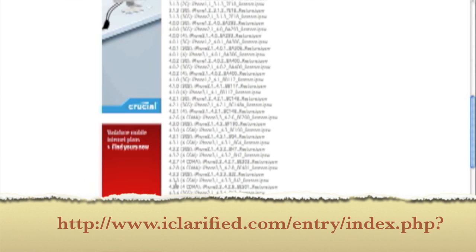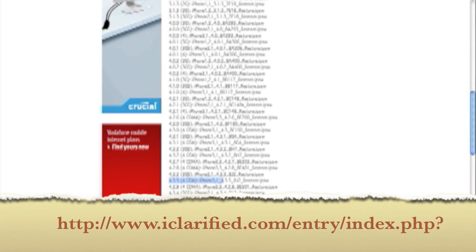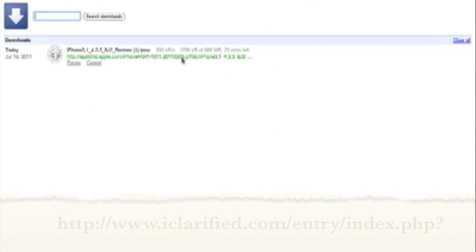I can see here 4.3.3 for iPhone 4 GSM. So if you're using a 3GS, go ahead and click for 3GS. I'm going to click this and you can see my download has started already. It's a pretty massive file — 666 MB — so it should take some time to download. Be patient and wait for it to complete.